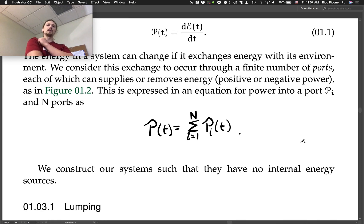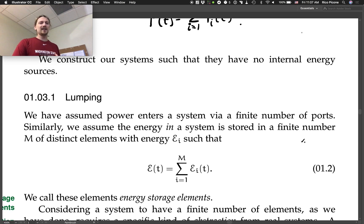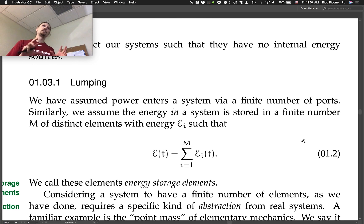We construct our systems such that they have no internal energy sources. If something's generating power, we're going to put that outside the system, draw the boundary, and then power can flow into the system from that. Lumping is probably a new term to you, but we've been doing lumping as long as you've been doing any sort of mathematical analysis of the physical world. Lumping is something that we will do a lot of in this class, and this is one of the areas that's probably the most difficult to do as an engineering designer.